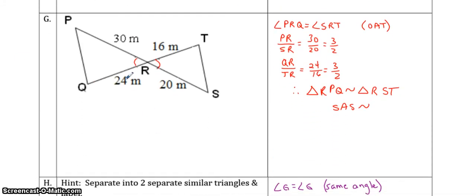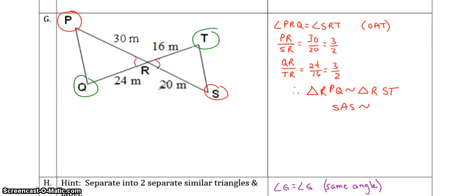Example G — we've been given two sides, which should tell you that we've got a side-angle-side similarity. You've got these opposite angles here, and again you have to use the three letters. So angle PRQ is equal to angle SRT. Any time you have one of these examples where the triangles are connected with opposite angles, it's always the opposites that correspond — so P will correspond to S, and Q will correspond to T. That will help you get your letters in the right order.